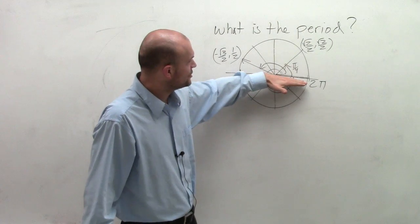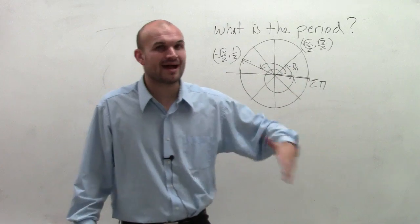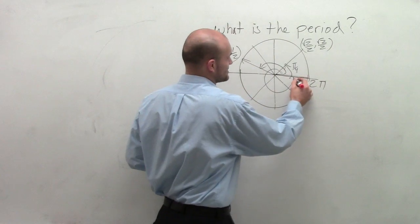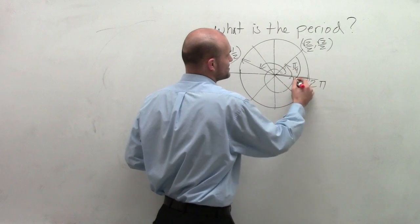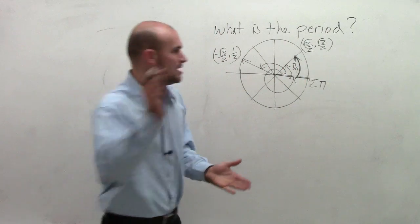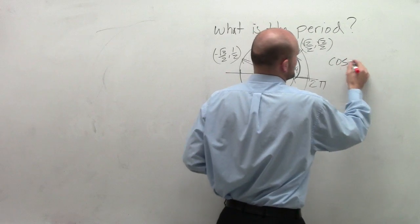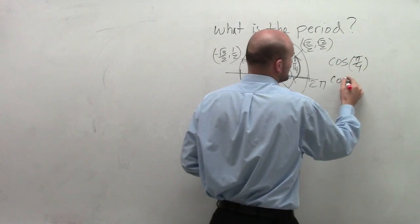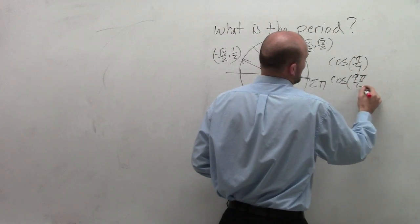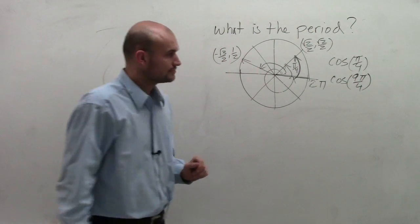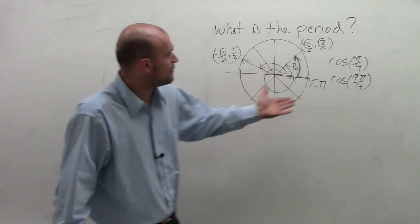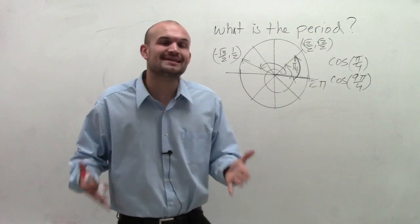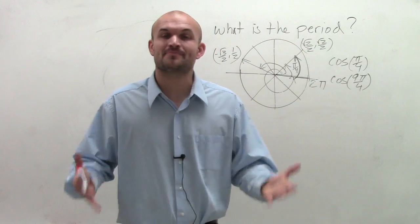Now once I continue, once I go back over, what happens is our graph just starts repeating itself again. This angle is different. If I go all the way around and back over, these are what we call coterminal angles. But it's important for us to understand that the cosine of pi over 4 is exactly the same as the cosine of 9 pi over 4. And the same thing, even if I went around again, if I kept on adding 2 pi, we're still going to get the exact same values.